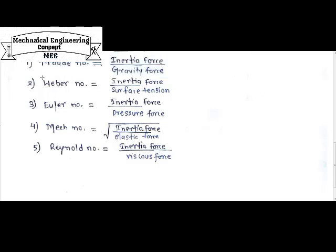Second is Weber number. Weber is the ratio of inertia force to surface tension. We know the inertia force is fixed in the numerator. What is related with surface tension? Weber starts with W or V, and we are confusing between V and W — we are in some kind of tension. So we can say the denominator is related to surface tension. Weber number is the ratio of inertia force to surface tension.